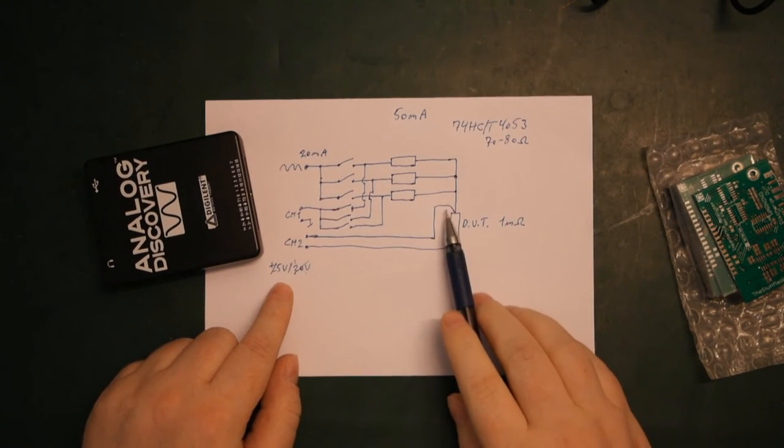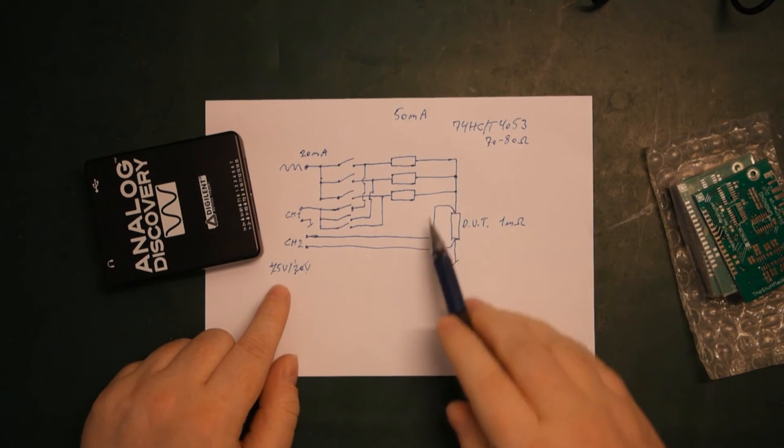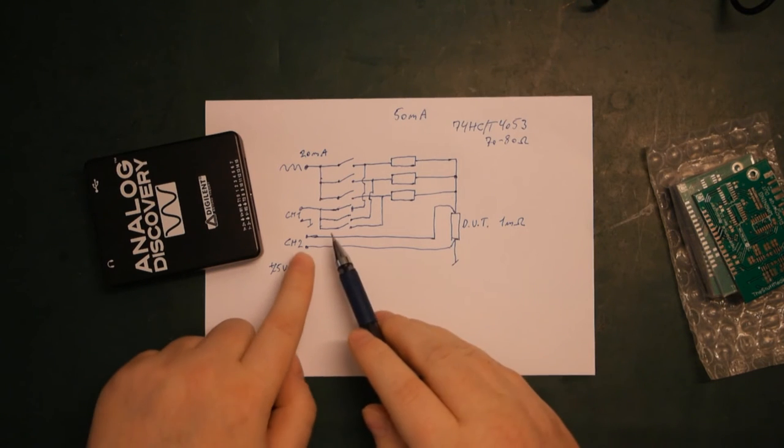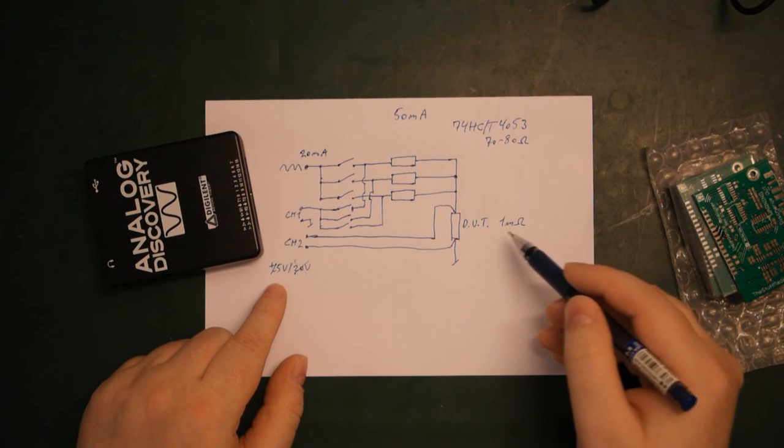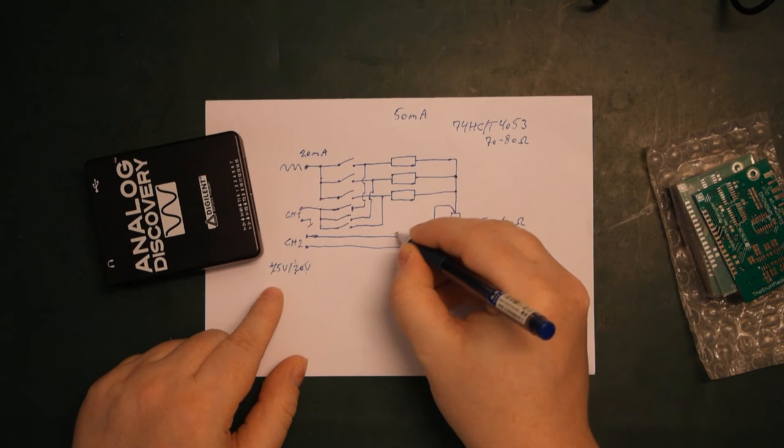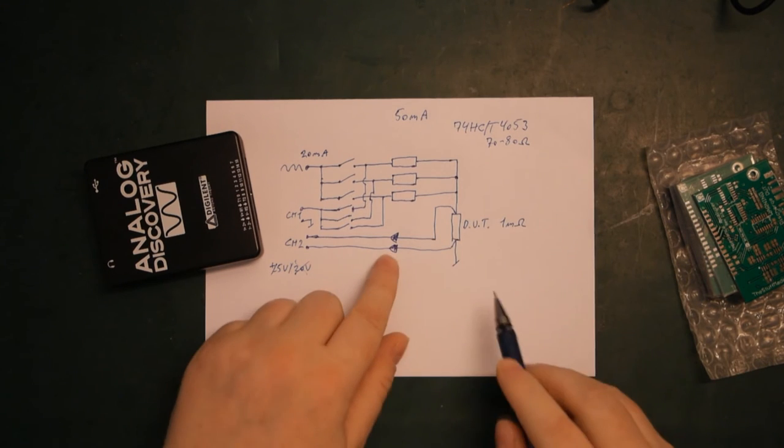It's simply not enough to generate enough voltage across a 1 milli-ohm DUT here to generate a signal large enough that we can measure it. So that means we need some amplification. So what I've done is I've added, let's just draw it like this, this amplification here.